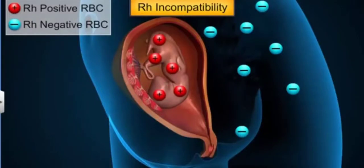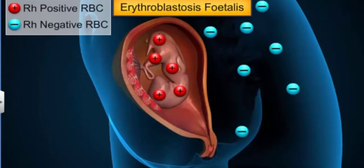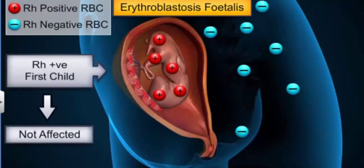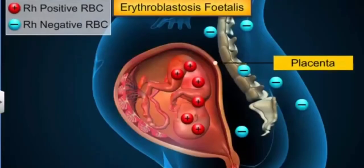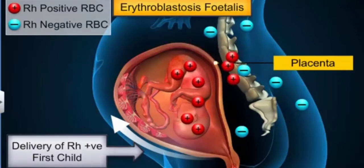An example of such Rh incompatibility takes place in an Rh negative woman carrying an Rh positive fetus, resulting in a condition called erythroblastosis fetalis. In most cases the first child is not affected because the blood of the mother and child are well separated by the placenta. During delivery, a little of the baby's blood passes through the placenta and mixes with the mother's blood, which induces the formation of Rh antibodies in the mother's blood.